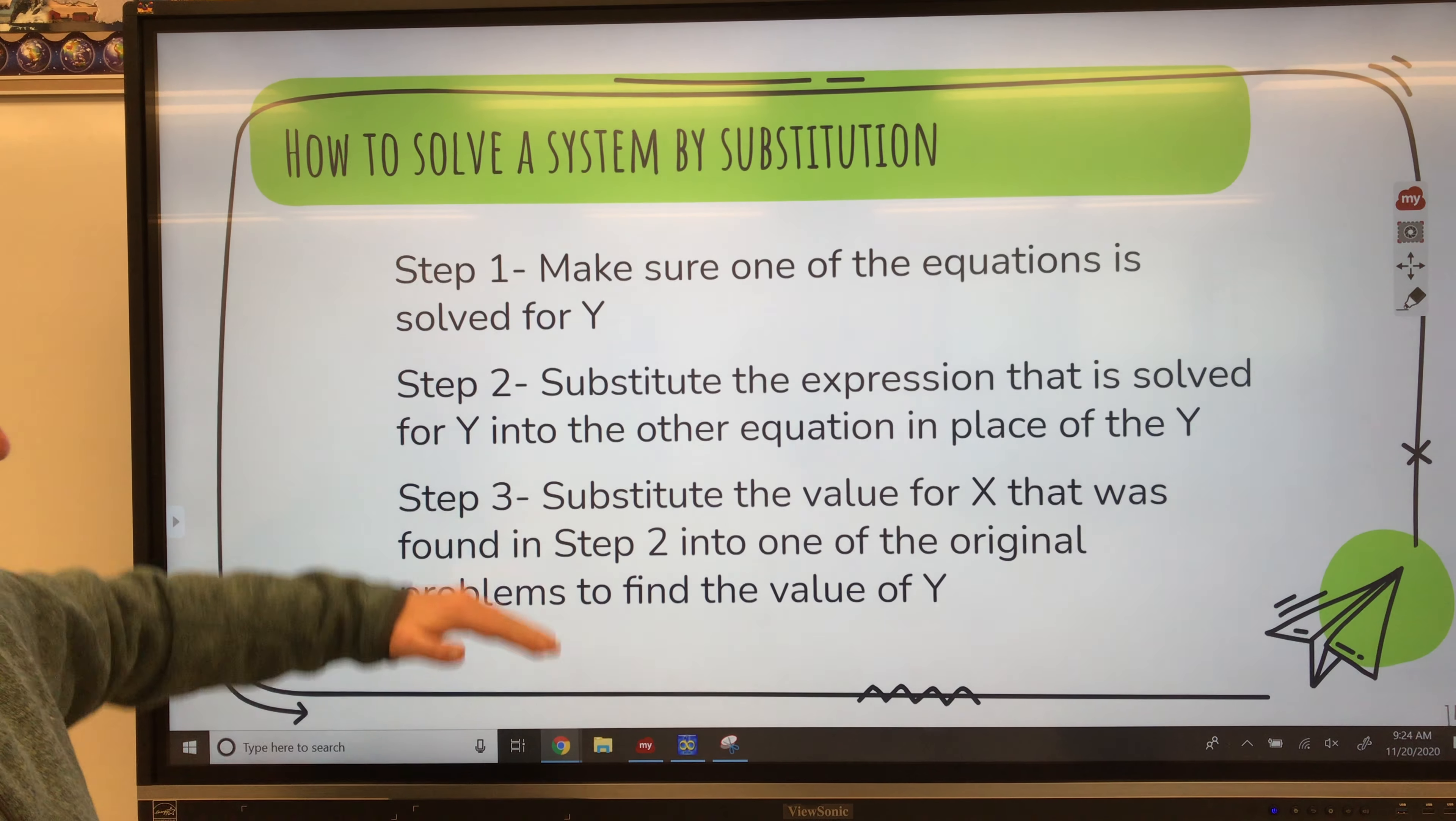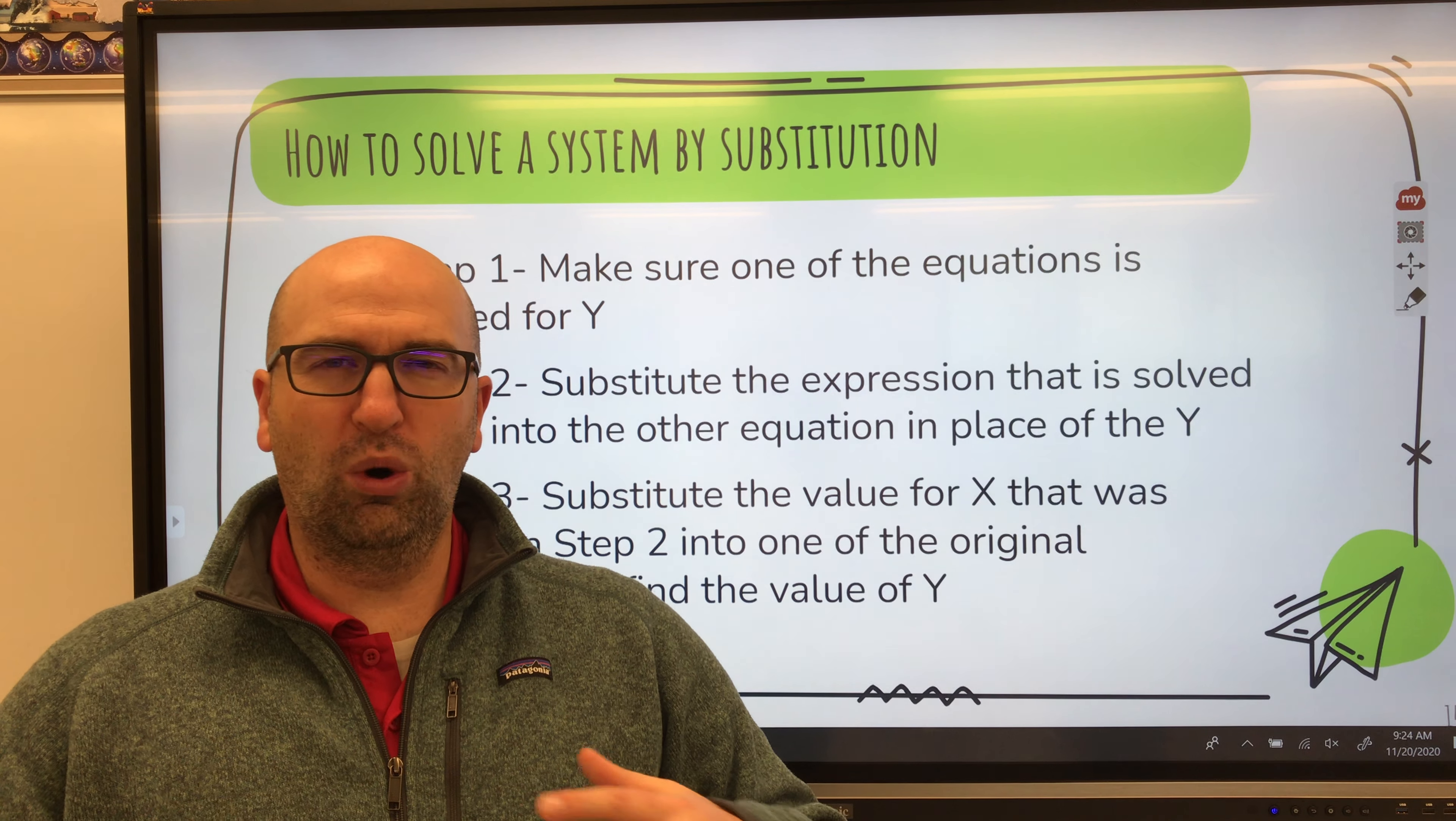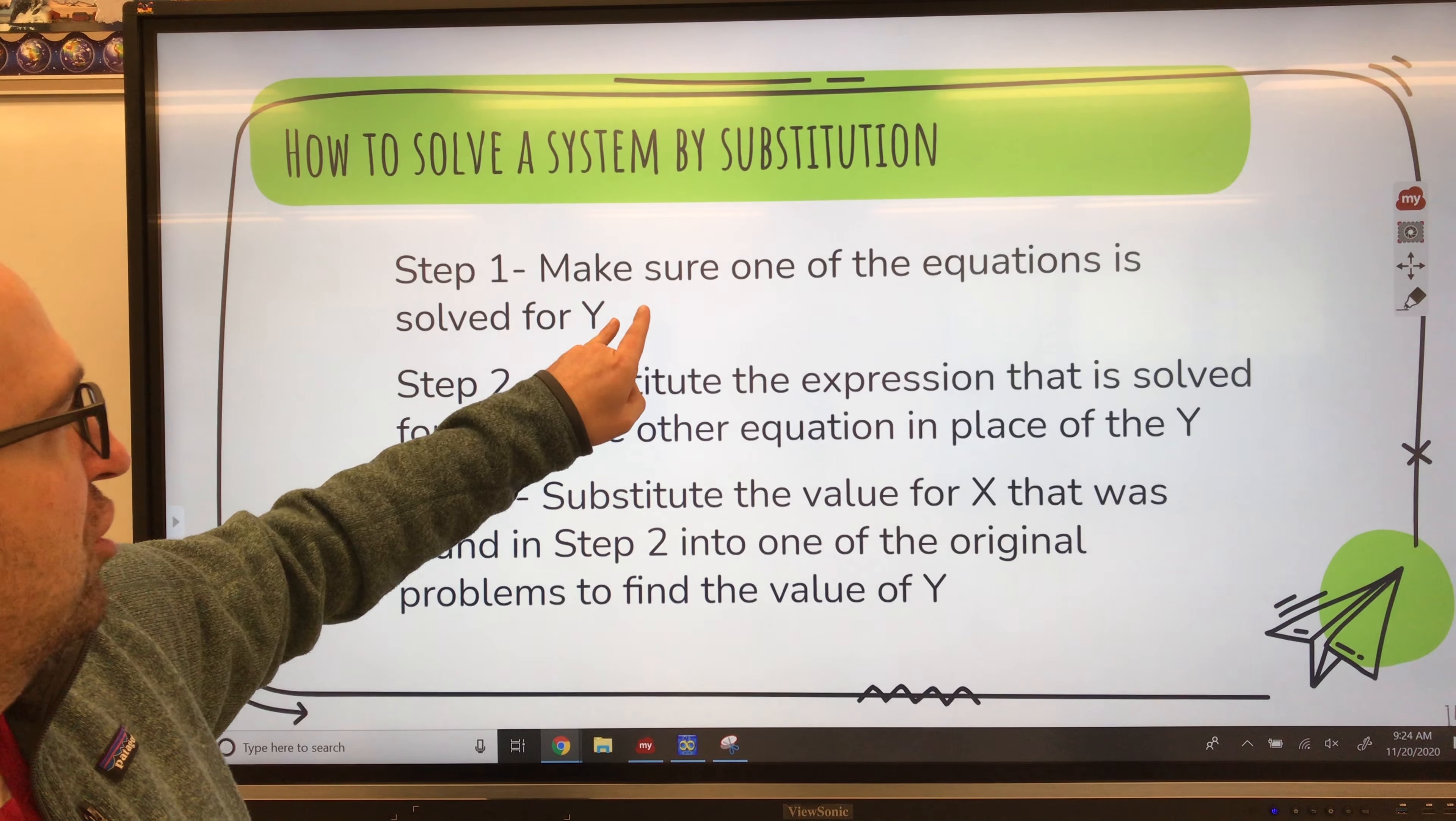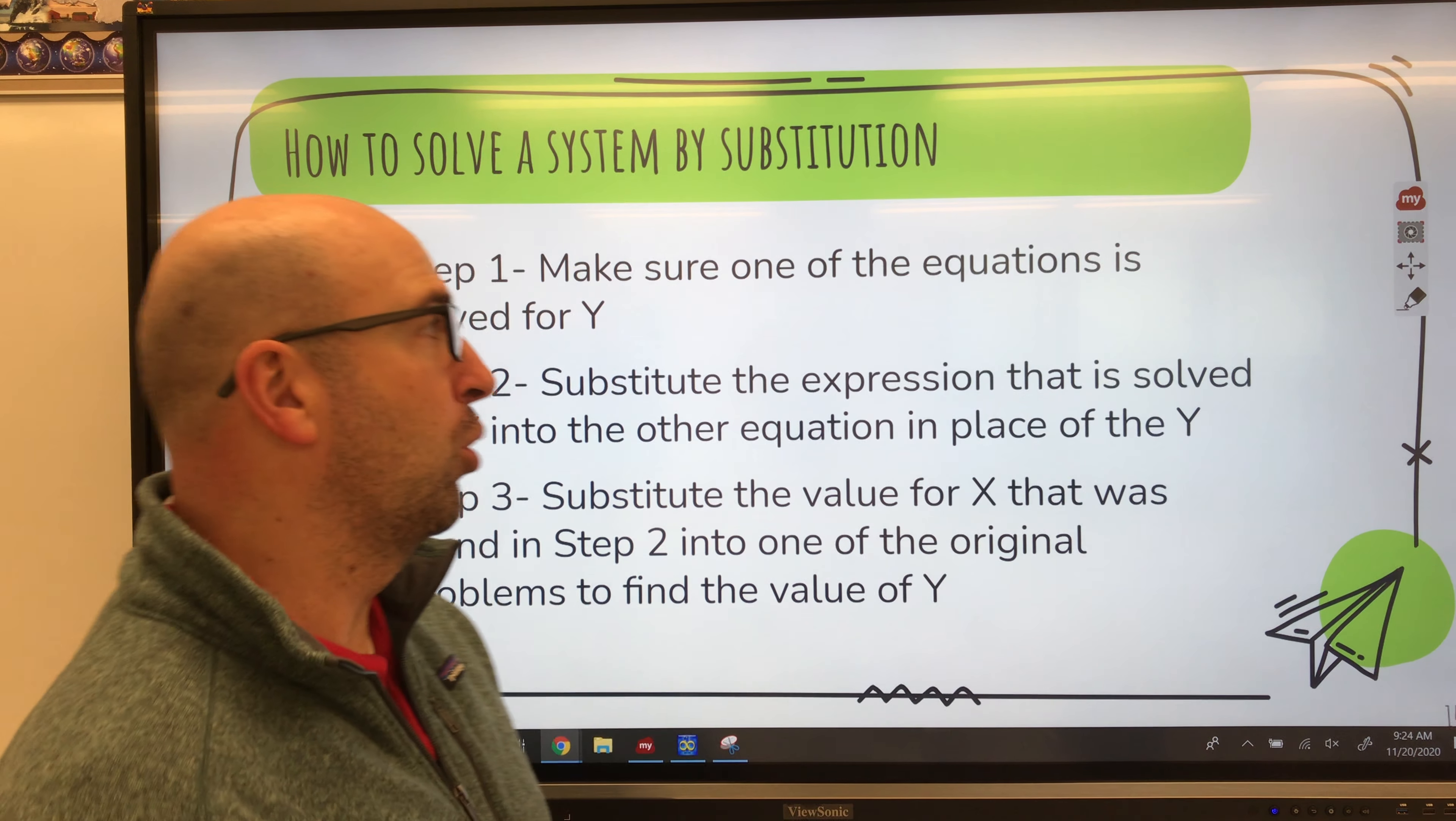So, these are the steps that it takes to solve a system with substitution. And if we went over them, it would just confuse you about what exactly needs to be done without seeing how it's done. But the first thing we need to make sure of is that one of the equations is solved for y. What that means is one of the equations needs to be in slope-intercept form.